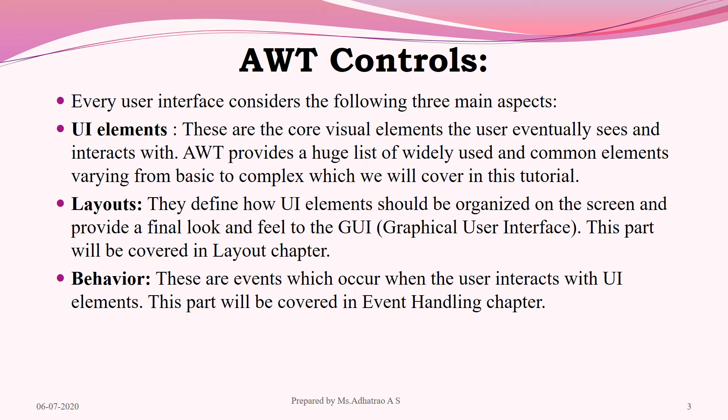First is User Interface Elements — these are the core visual elements the user eventually sees and interacts with. AWT provides a huge list of widely used elements varying from basic to complex, including components like buttons, text boxes, labels, choice controls, scrollbars, and so on. The second element is Layouts — they define how UI elements should be organized on the screen and provide the final look and feel to the GUI. This part will be covered in the Layout chapter.